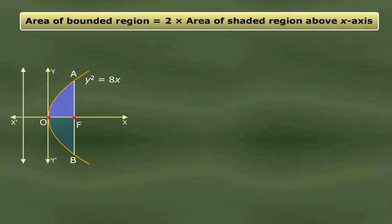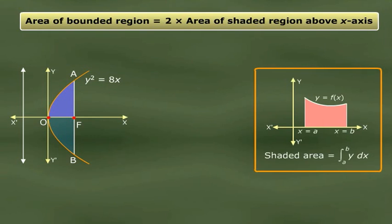The formula that we will use: Suppose we have a curve y = f(x). The shaded area is given by this expression: integral from a to b of y dx. And what are a and b? They are the limits of integration. So let's use this formula in this case.